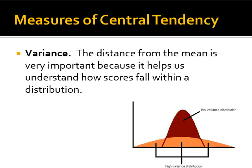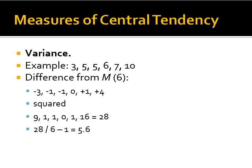Variance is very important for understanding how a sample is distributed. It looks at the distance from the mean for each score. In our example of 3, 5, 5, 6, 7, and 10, with a mean of 6: 3 is 3 away from 6, so minus 3; each 5 is minus 1; 6 is 0 difference; 7 is plus 1 above the mean; and 10 is plus 4 above the mean.